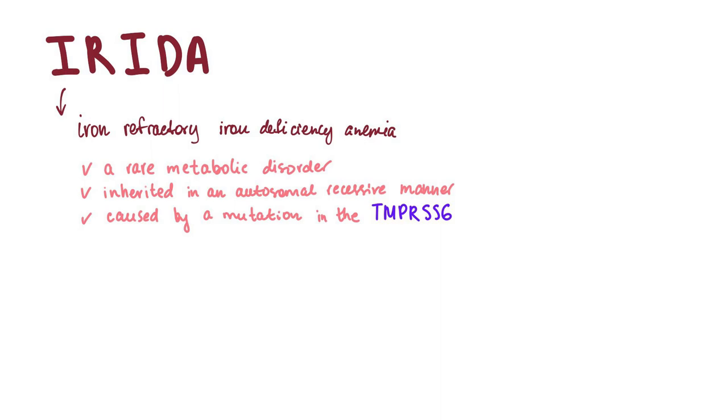Okay, what else do we know about this condition? It's a rare metabolic disorder inherited in an autosomal recessive manner and it's caused by a mutation in the TMPRSS6 gene, which equals metriptase-2, which is a serine protease enzyme.